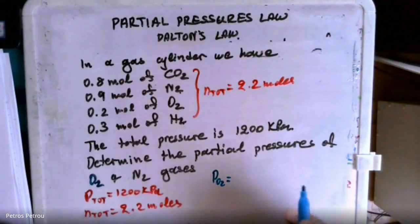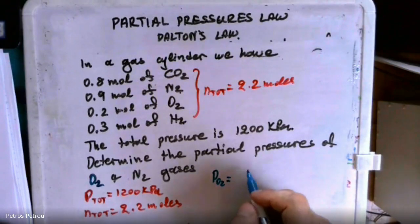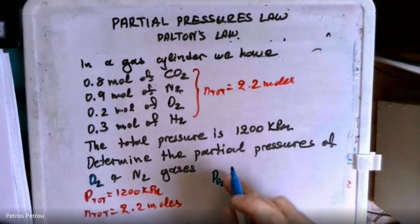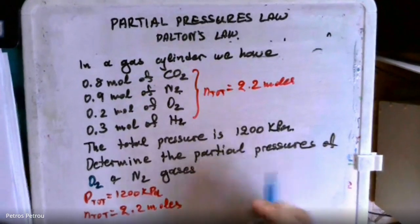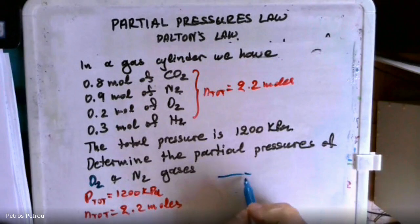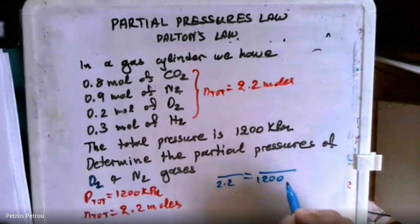Are you okay doing it this way directly or having the ratio, doing the ratio? I'll just go with the ratio first so you actually see it a little easier. So if you have 2.2 moles, you have 1,200 kilopascals.